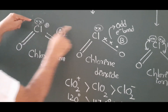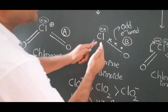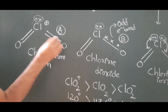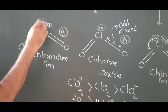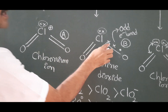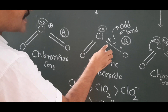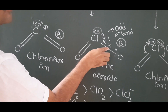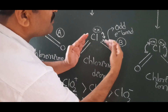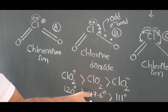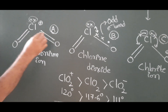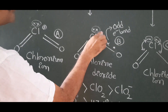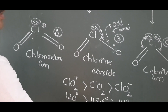ClO₂⁺ and ClO₂ both have one lone pair — so why does ClO₂⁺ have a higher bond angle? In ClO₂, because of the odd electron bond, there is more repulsion between the lone pair and the odd electron pair. This greater repulsion pushes the bond pairs closer together, decreasing the bond angle. Normal bonds have two electrons, but the odd electron bond has three electrons, causing more repulsion.